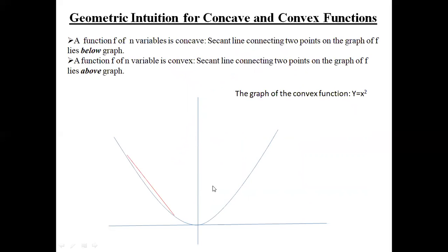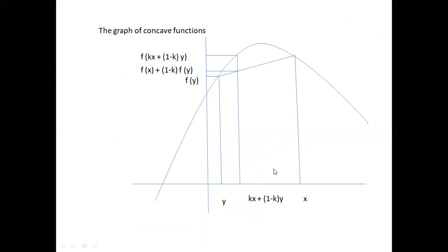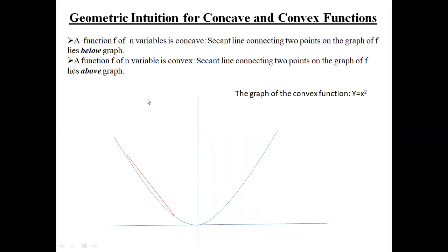This illustrates concavity. Similarly, the convex function y = x² is shown. For n variables, a function f is concave when the line segment connecting two points on the graph lies below the graph. For convex, the red line connects two points and lies above the graph, showing the line segment connecting two points on the graph of f lies above the graph.